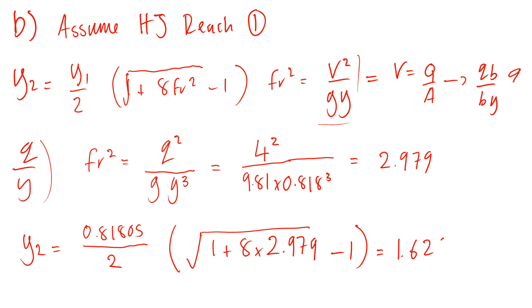So our assumption was correct because Y1 is equal to 0.818 and Y2 is 1.629. Our assumption that the hydraulic jump occurs in reach one is correct because Y2 is higher than Y1.